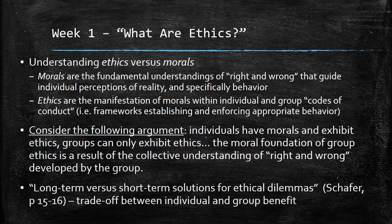Ethics are the manifestation of morals within individual and group codes of conduct. They are the actual specific or explicit frameworks, rules, laws, and norms that are both established and used to enforce appropriate behavior. It's important to consider that both norms and, to a broader extent, morals and ethics vary according to context. From the beginning, one of the things we have to consider is the idea that there really is no single set of objectively true or valid ethics or morals. Individuals have morals and exhibit ethics; groups can only exhibit ethics. The moral foundation of group ethics is a result of the collective understanding of right and wrong developed by the group.